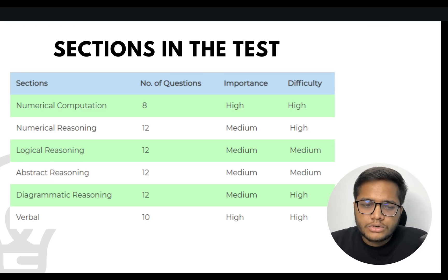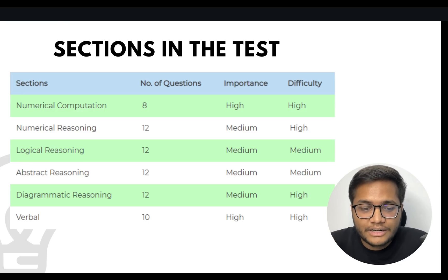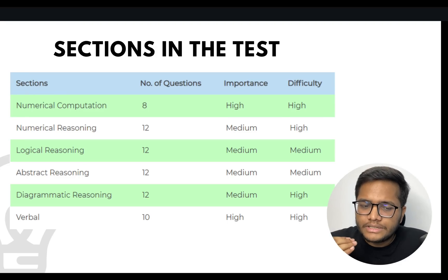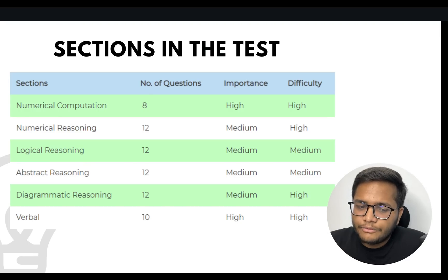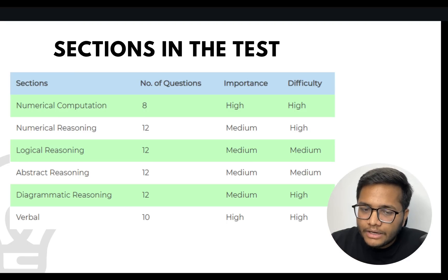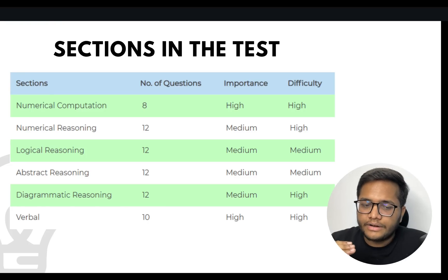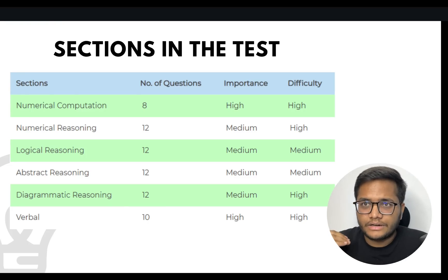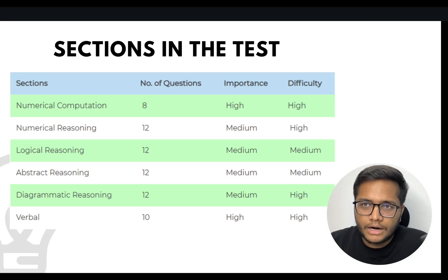Numerical computation has 8 questions — it's an important and tough section. Numerical reasoning is also a little tough. Then there's logical reasoning, abstract reasoning, diagrammatic reasoning, and verbal reasoning. In terms of difficulty, numerical computation and numerical reasoning are harder compared to the other sections, while abstract, logical, diagrammatic, and verbal reasoning are comparatively easier.